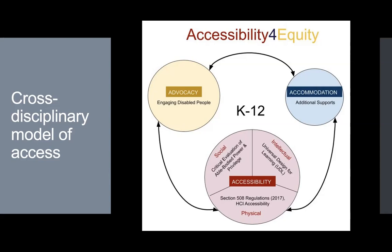Looking more closely at the three key elements of the framework — accessibility, advocacy, and accommodation — the incorporation of other existing theories of access is apparent. Zooming in on the largest of the three circles, which is labeled accessibility, one can see the influence of theories from all four fields. The accessibility circle is divided into three equal wedges labeled physical, intellectual, and social. The framework suggests that physical access is accomplished through the use of the legal and HCI conceptions of accessibility. Intellectual access is achieved through the use of UDL. And to achieve social access, the nuanced intersectional understandings of disability and the critical examination of able-bodied power and privilege that arise from disability studies must be incorporated.